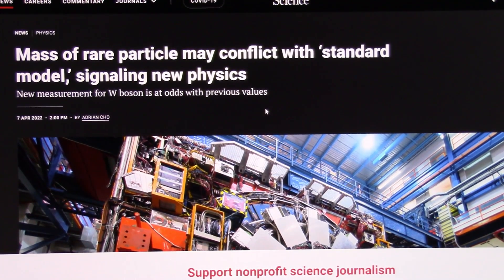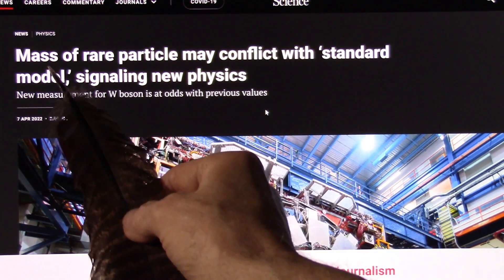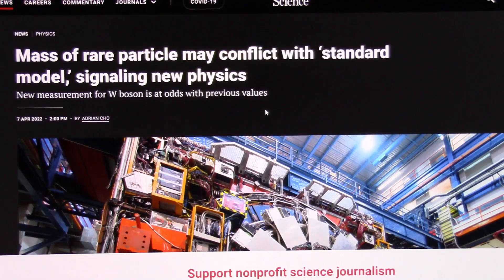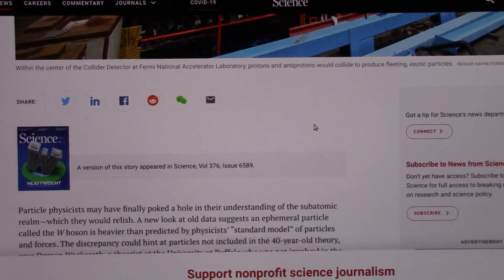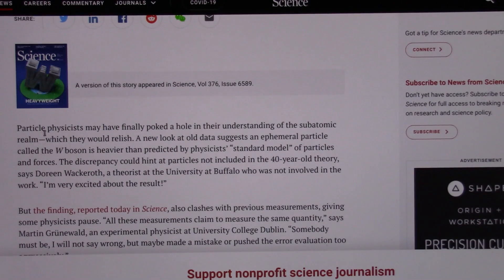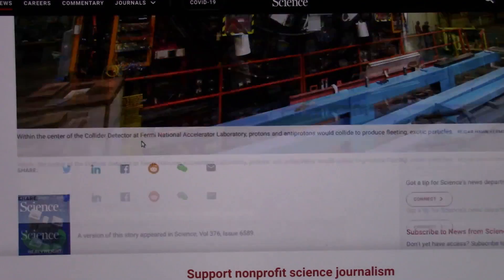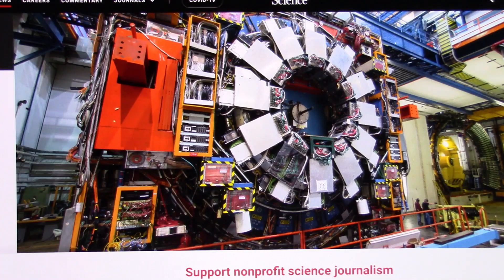I showed you that black particle. This is what they're talking about right here. Rare particle may conflict with standard models, signaling new physics. The mass, which I showed you, is enormous. It's signaling new physics. Absolutely it's signaling new physics, because the old physics was not correct. Particle physics may have finally poked a hole in their understanding of the subatomic realm, which they would relish. Well, they have not been relishing it for the last seven years. The only way they can relish it was something like this. I have shown that hole in particle physics for years and years now.